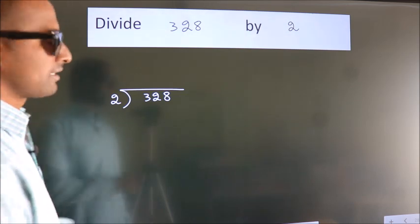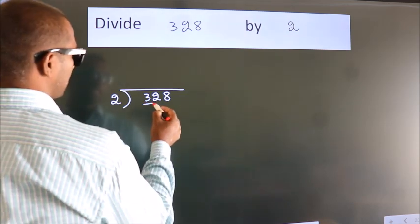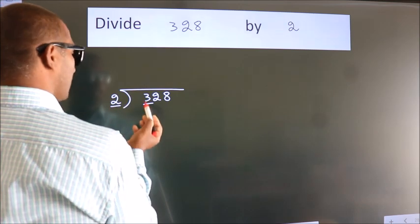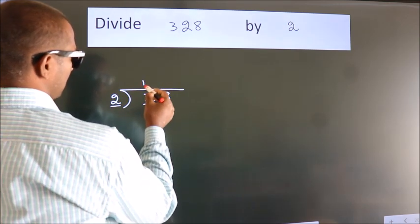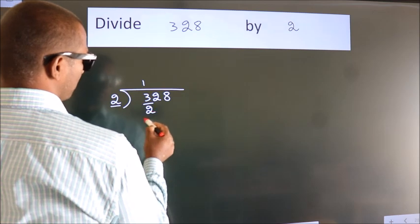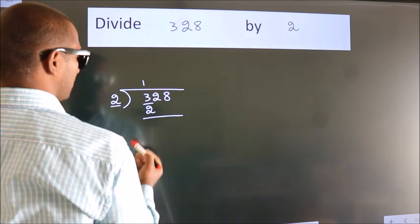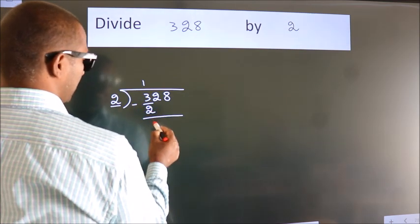Next, here we have 3, here 2. A number close to 3 in the 2 table is 2 times 1 equals 2. Now we should subtract. We get 1.